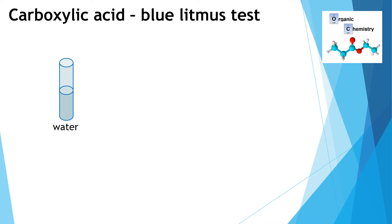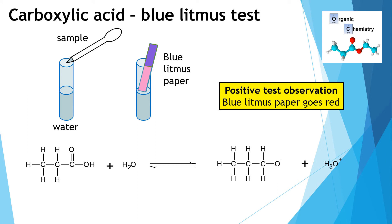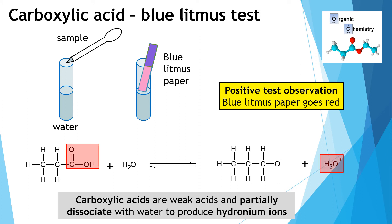Carboxylic acid, like an amine, has a specific property — it's an acid. To test for it, we add carboxylic acid to water, shake it, and add blue litmus paper. The blue litmus paper goes red because the solution is acidic. This is a physical test. Carboxylic acid is a weak acid — it donates its proton to water, producing hydronium ions. Carboxylic acids partially dissociate with water to produce hydronium ions, which is why blue litmus paper goes red.